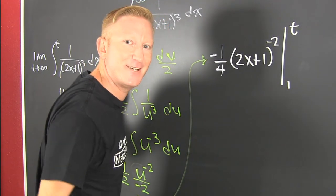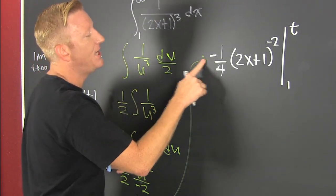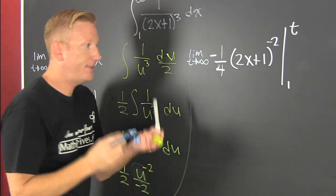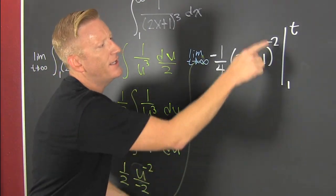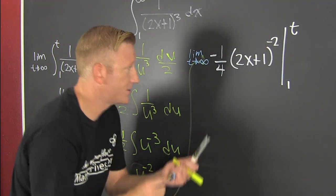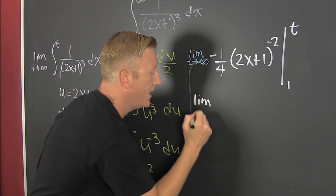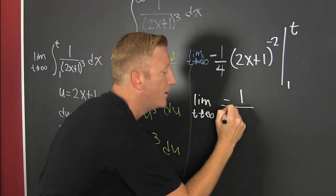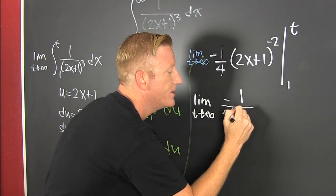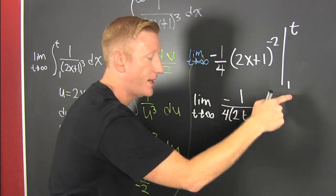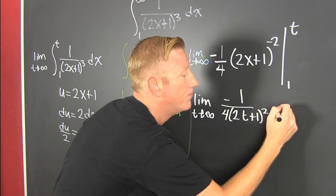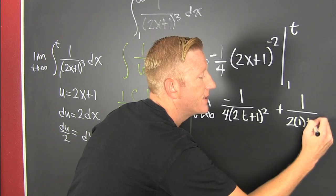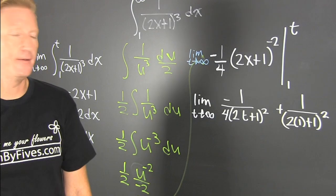We need to put the limit out in front of that. So then this is the limit as t goes to infinity. Now if that's to the minus 2, then it drops down to the denominator by negative property of exponents. So I write the limit as t goes to infinity of minus 1 over 4 times - now that's in the denominator - so 2t plus 1 squared minus 1 over 2 times 1 plus 1 squared.